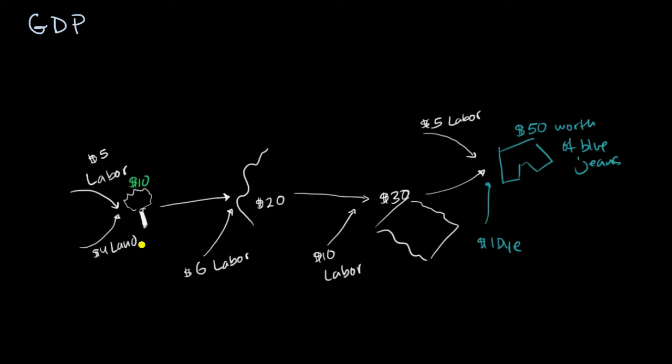And we gave the example of producing jeans where maybe the farmer helps produce the cotton, and then the thread maker takes that cotton and makes thread, and then the fabric maker takes the thread and makes fabric, and then the jean maker takes the fabric and produces jeans, and then the market value of those jeans was $50.